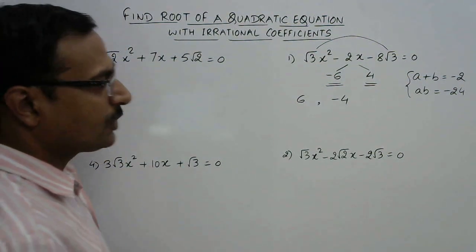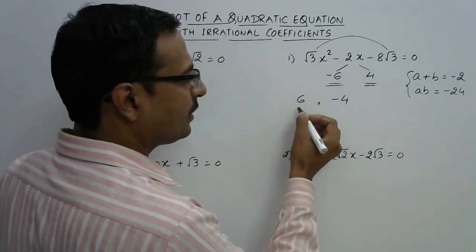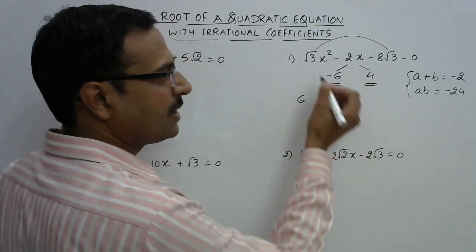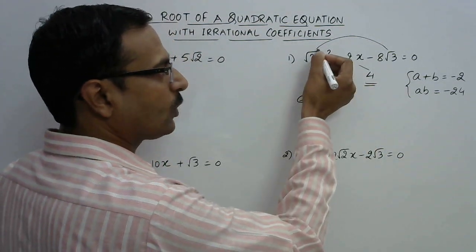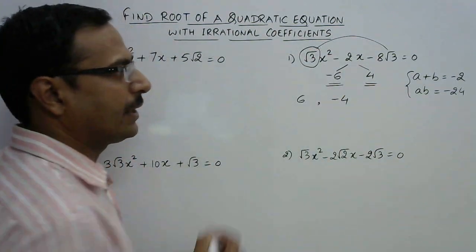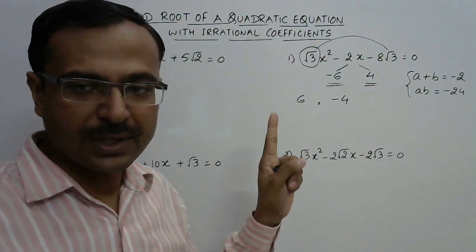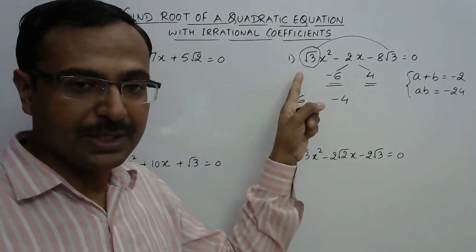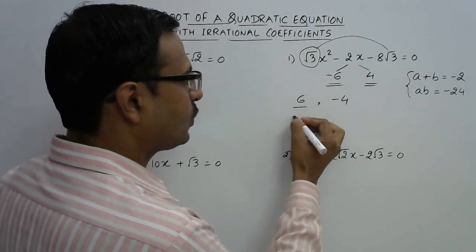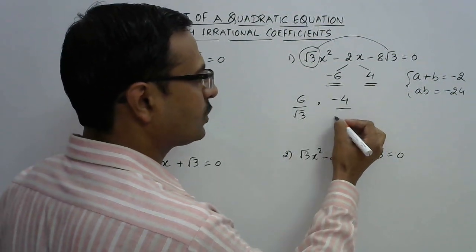The third step is to divide both these numbers by the coefficient of x². The coefficient of x² here is √3, so just divide 6 by √3 and divide 4 by √3.